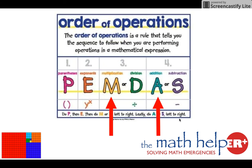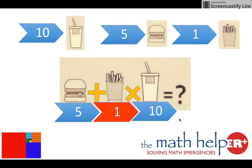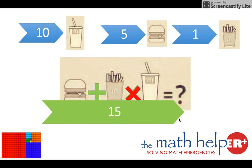So we have multiplication and addition. Multiplication has to come first. One times 10 is 10. Five plus 10 is 15.